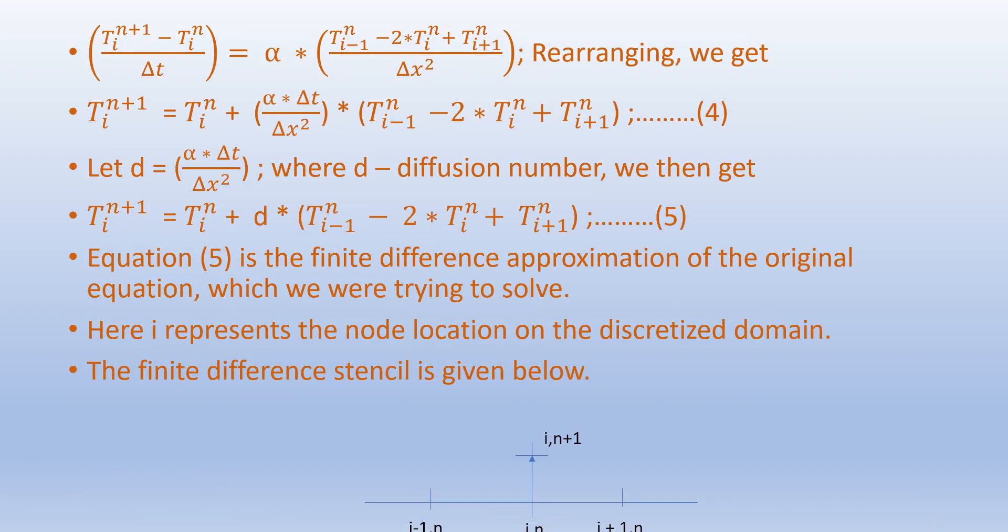Accordingly, we obtain the FTCS discretized equation. The diffusion number d = α·Δt/Δx². We then get: T_i^(n+1) = T_i^n + d·(T_(i-1)^n − 2·T_i^n + T_(i+1)^n).